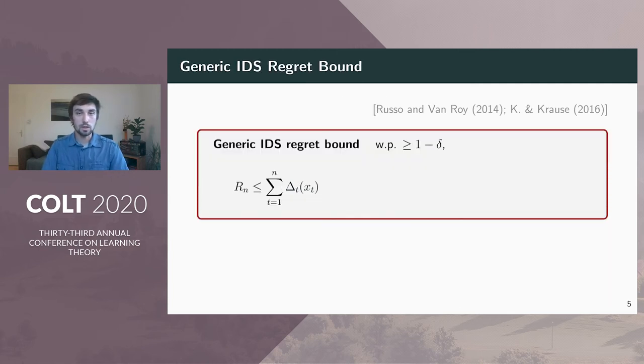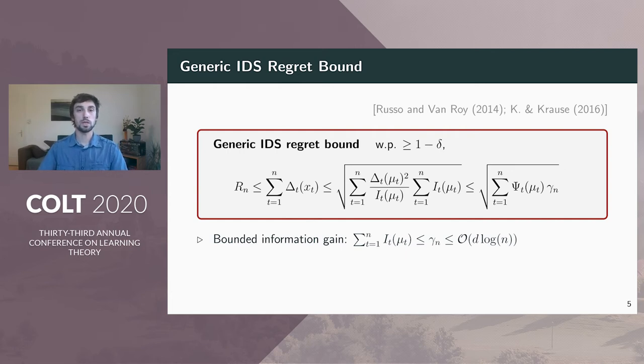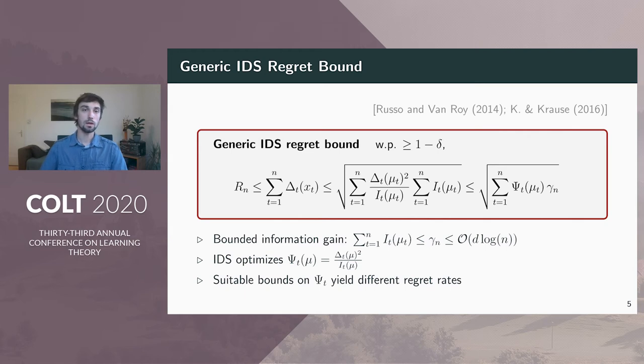Let's have a look at the standard argument to bound the regret of IDS. First, we upper bound the regret using the regret estimates. Then we introduce the information gain to the sequence and use the Cauchy-Schwarz inequality. For our choice of the information gain function, the sum over the information gain is bounded by a constant gamma_n that is going to be of order d log n. IDS optimizes the information ratio that remains in the bound. From here on, the idea is to find suitable bounds for gamma_t and this is going to lead to different regret rates.